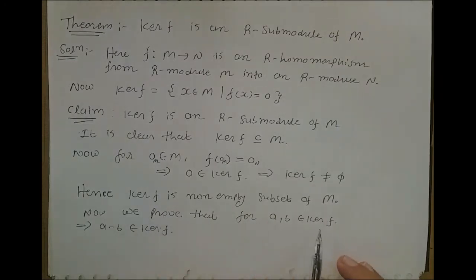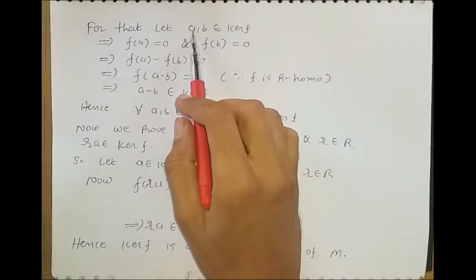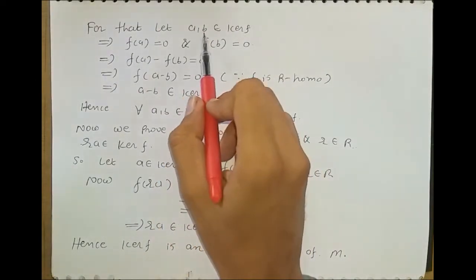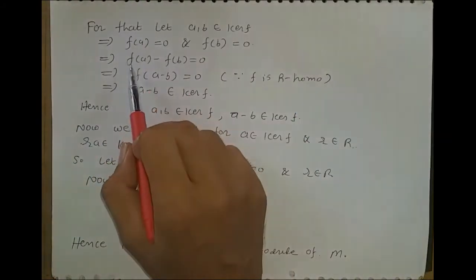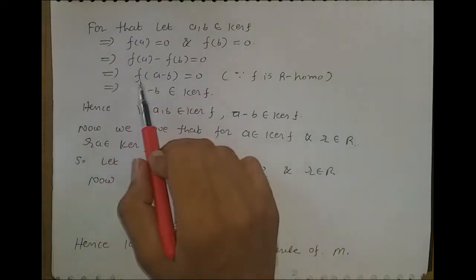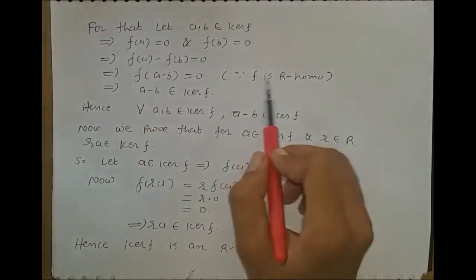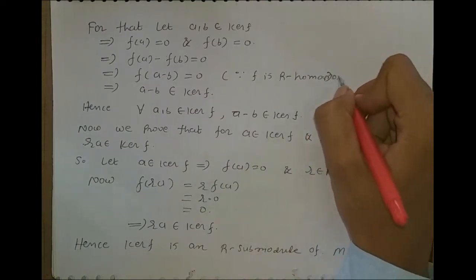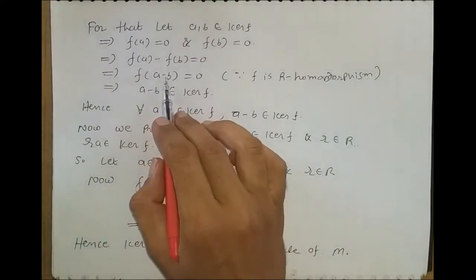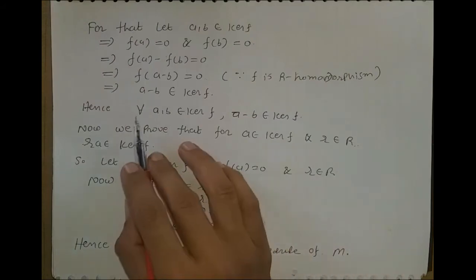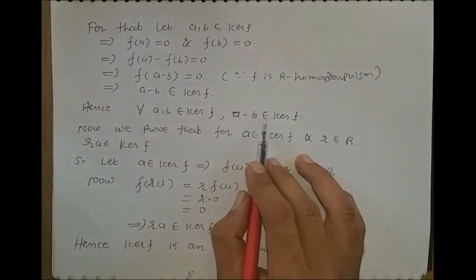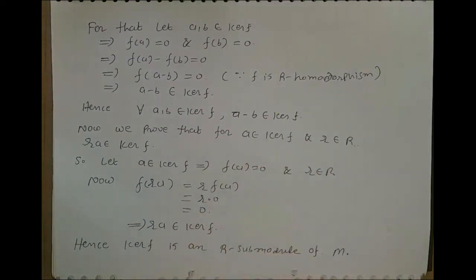Now we prove the two conditions. First: let A, B belong to ker(F), and then we show A minus B also belongs to ker(F). Since A and B belong to ker(F), by definition F(A) equals 0 and F(B) equals 0. This implies F(A) minus F(B) equals 0, which implies F(A minus B) equals 0, because F is an R-homomorphism. So F(A minus B) equals 0, and again by the definition of kernel, A minus B belongs to ker(F). So for all A, B in ker(F), A minus B also belongs to ker(F). The first condition is satisfied.